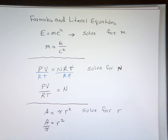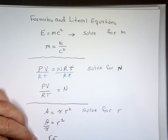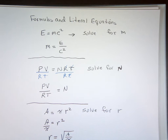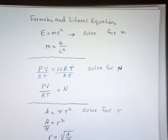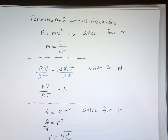So what do we do to get r? Square root — we take the square root of both sides.